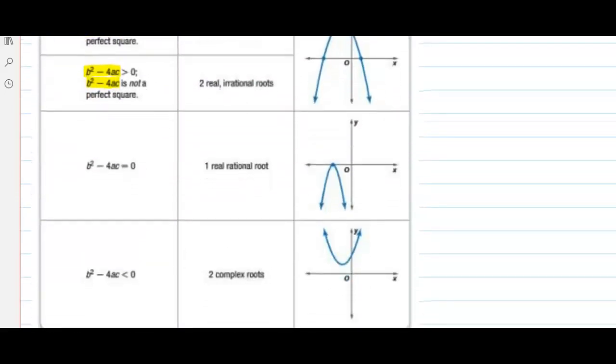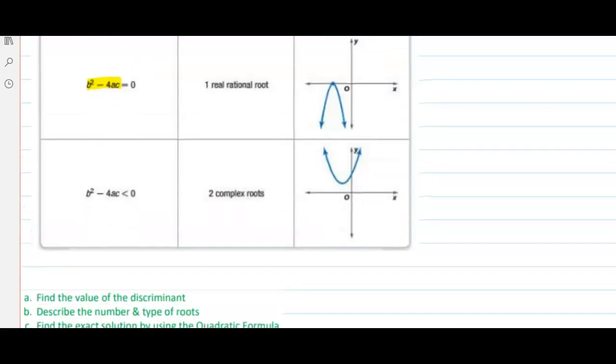Sometimes the discriminant is going to equal 0. And finally, sometimes the discriminant will be negative. It will be less than 0.